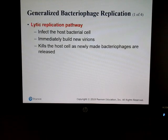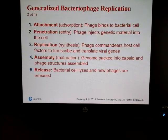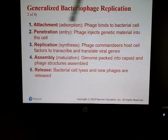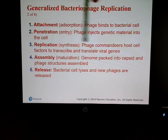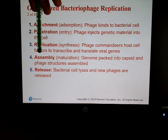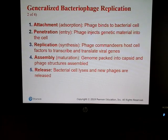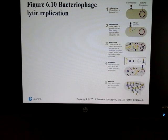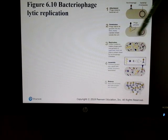For bacteriophage replication, there is a lytic replication pathway in which the virus kills the bacteria it infects. The steps are: the bacteriophage attaches to a bacterial cell wall, then penetrates by injecting its genetic material into the cell. Synthesis occurs — more RNA or DNA and proteins are made. Then the virus reassembles, and finally the virus breaks out of the bacteria in the release step.